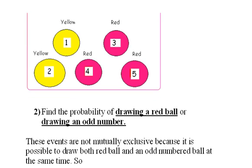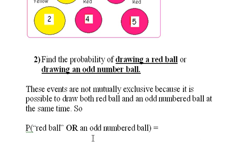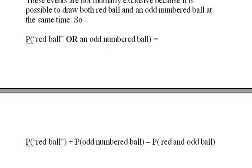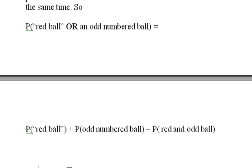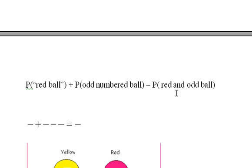Let's look at one more example. Find the probability of drawing a red ball or drawing an odd numbered ball. These events are not mutually exclusive because it's possible to draw both a red ball and an odd numbered ball at the same time — you could draw a 5. So the probability of drawing a red ball or an odd numbered ball equals the probability of drawing a red ball plus the probability of drawing an odd numbered ball minus the probability of drawing a ball that is both red and odd.